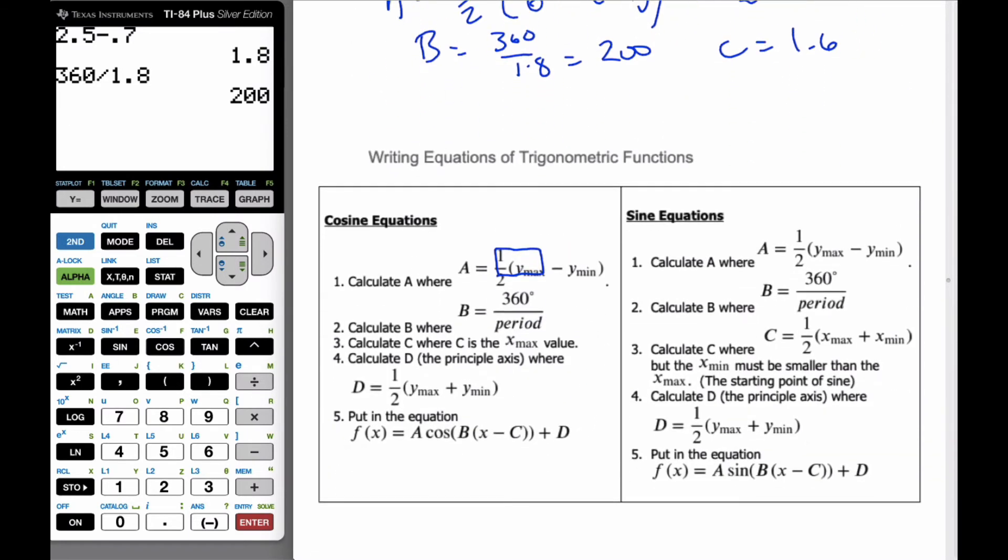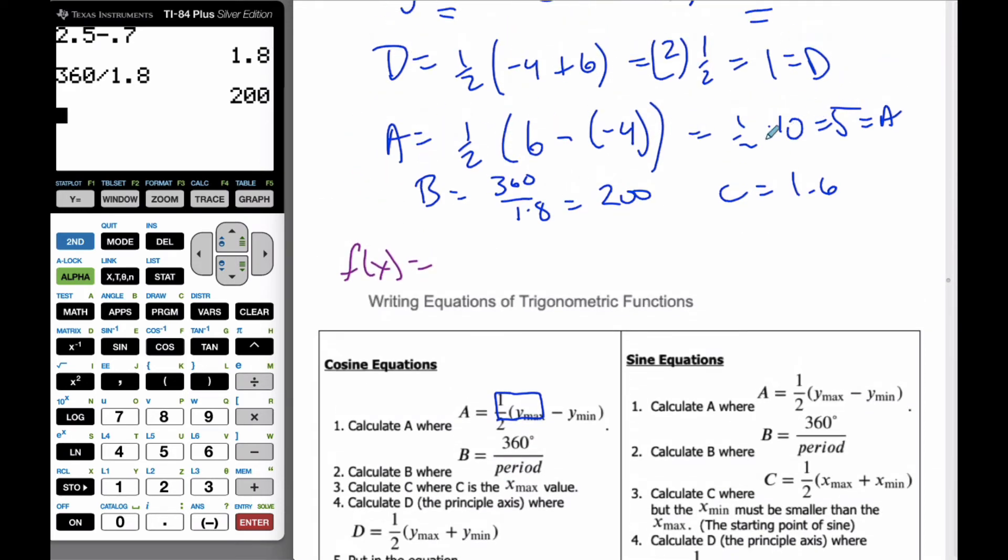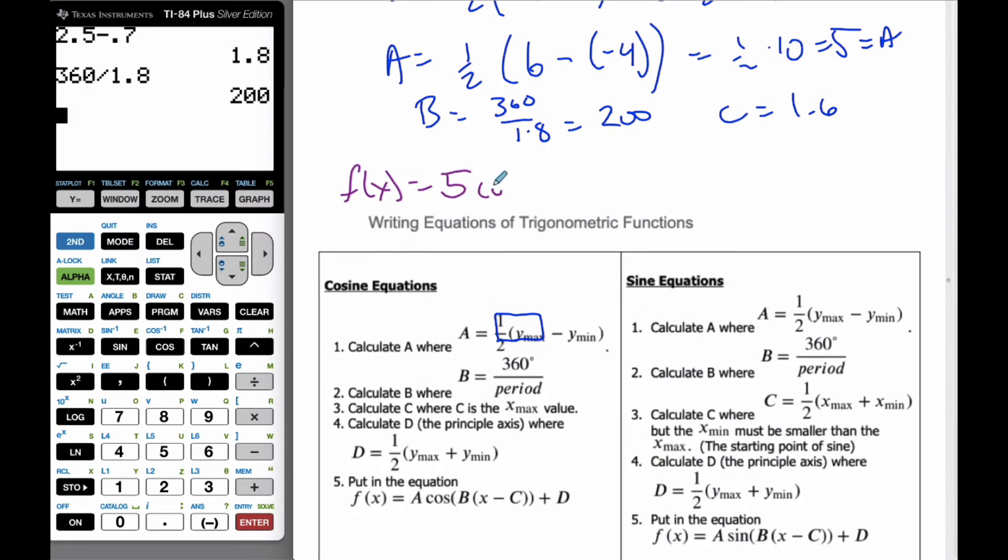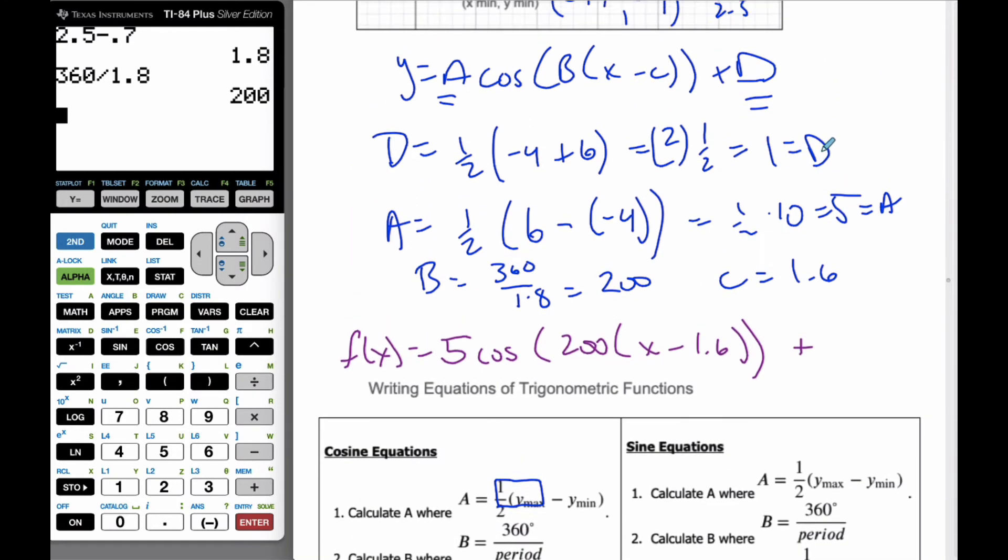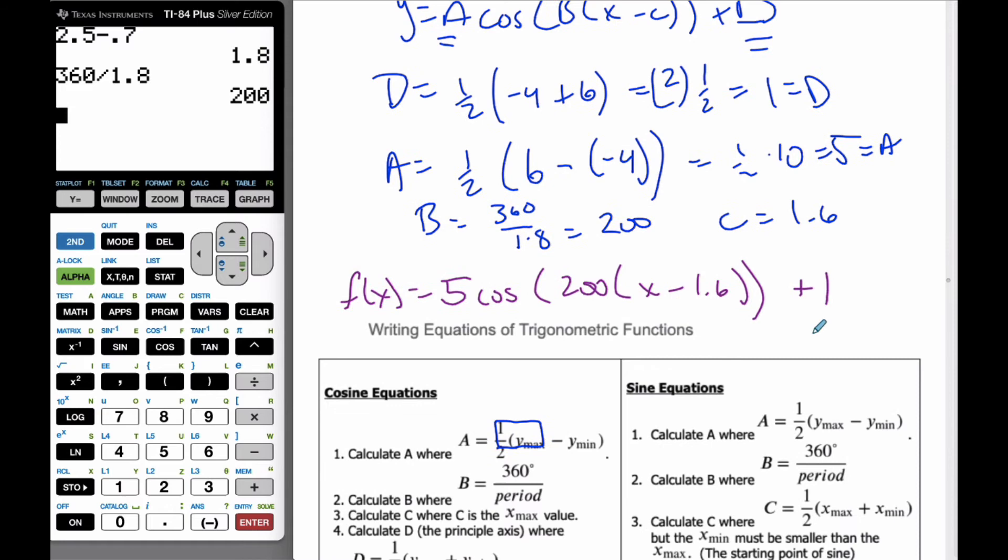I know that f of x, my function, is going to be a, which is 5, cosine the b value of 200, x minus 1.6, plus the d value, which is 1.